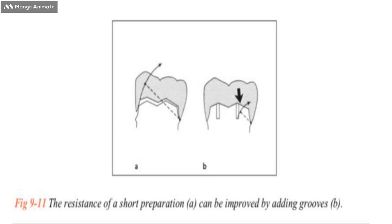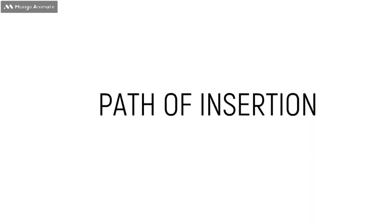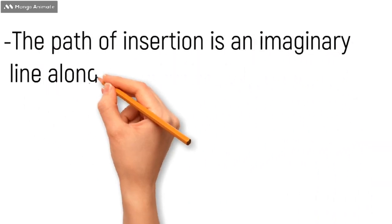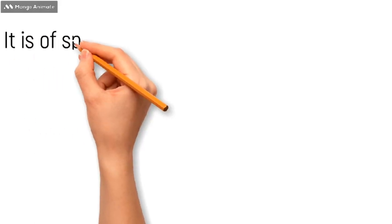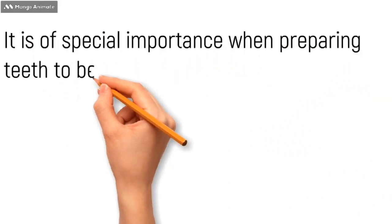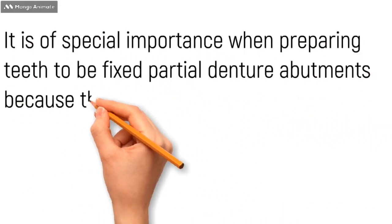Now the next point is the path of insertion, which is an imaginary line along which the restoration will be placed onto or removed from the preparation. It is determined mentally by the dentist and it is of special importance because when preparing a fixed partial denture, the paths of all abutment preparations should be parallel.